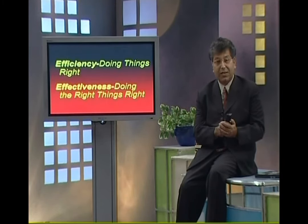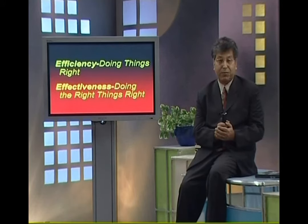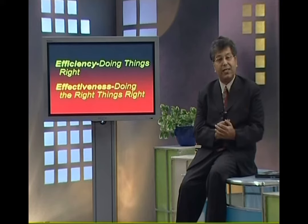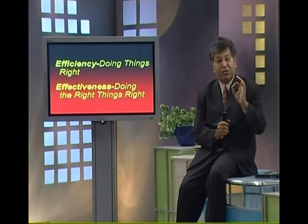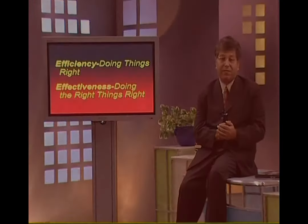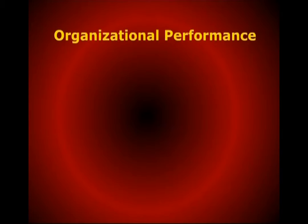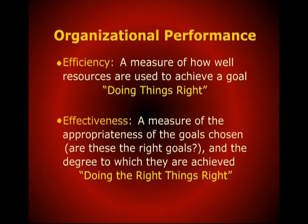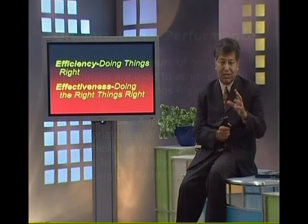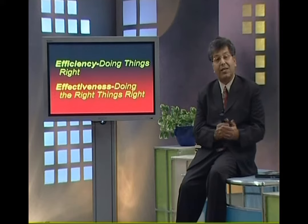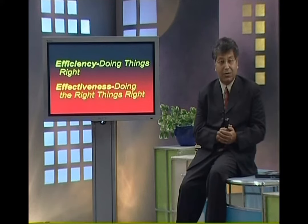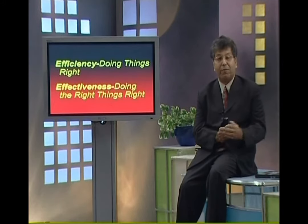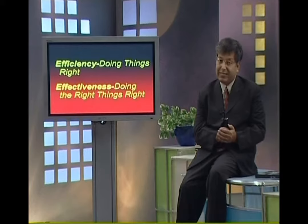Two new terms came up: efficiency and effectiveness. Efficiency is doing the thing right. For example, if you are doing your degree program and you complete your program in the right minimum required time, we say you did it in an efficient manner — it is doing the thing right. And effectiveness is doing the right thing right. Like if you planned a trip to Lahore and you actually reached Lahore, that means you are effective. But if instead you traveled on time but reached Peshawar — so it is not effective. That is the difference between them.